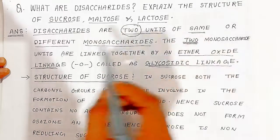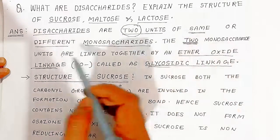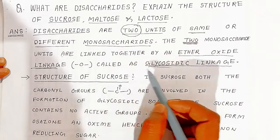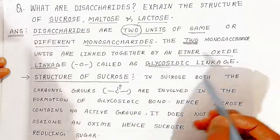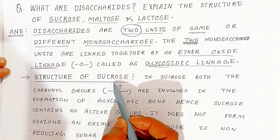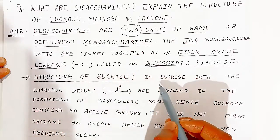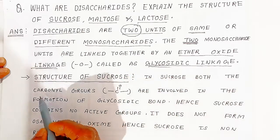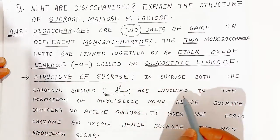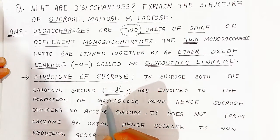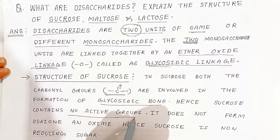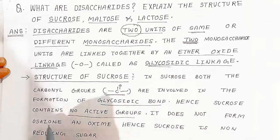So disaccharides are two units of same or different monosaccharides linked together by an ether oxide linkage, also called a glycosidic linkage. Now we are going to see the structure of sucrose. In sucrose, both the carbonyl (C=O) groups are involved in the formation of the glycosidic bond.